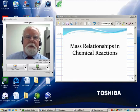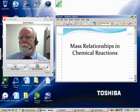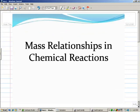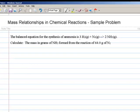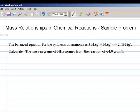Let's take a look at a specific example here. Let's say we're told that we have the equation for the production of ammonia from hydrogen and nitrogen gas, and asked to compute the mass in grams of ammonia that would be formed if 64 grams of nitrogen gas were reacted with more than enough hydrogen. In other words, we're assuming here that nitrogen N2 is the limiting reactant in this problem.